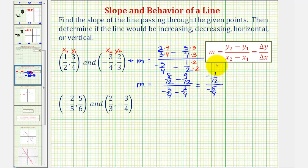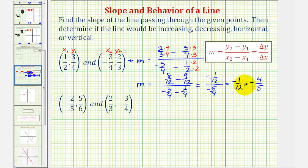Remember, a fraction bar means division, so this means negative one-twelfth divided by negative five-fourths. Instead of dividing, we can multiply by the reciprocal of negative five-fourths, giving us negative one-twelfth times negative four-fifths. Notice we have a common factor of four — one four in four and three fours in twelve. We have a negative times a negative, and therefore the slope is equal to positive one-fifteenth. Because the slope is positive, we can say the line would be increasing.